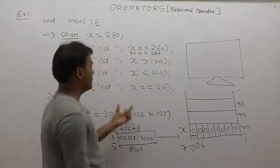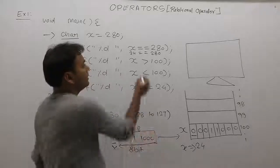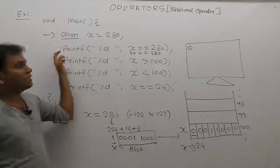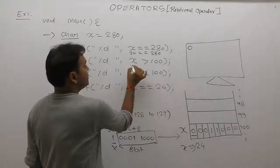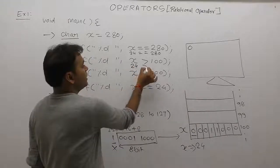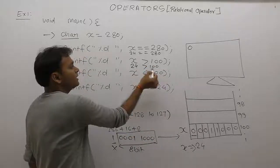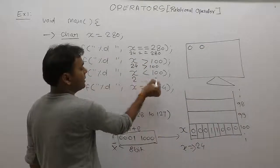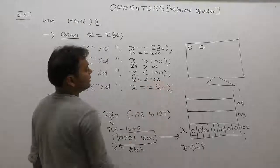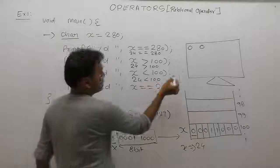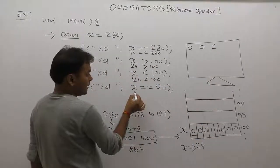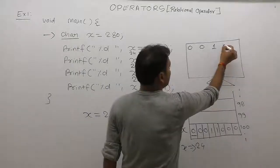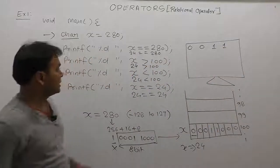When x value displays, it displays 24. First condition: x equals 280. Condition is false, so output is 0. Second case: 24 greater than 100. Again condition is false, output is 0. Next: x less than 100. 24 less than 100, condition is true, output is 1. Last case: x value is 24, comparison with 24. Both are same, therefore result is 1. This is the final output of this program. Clear?